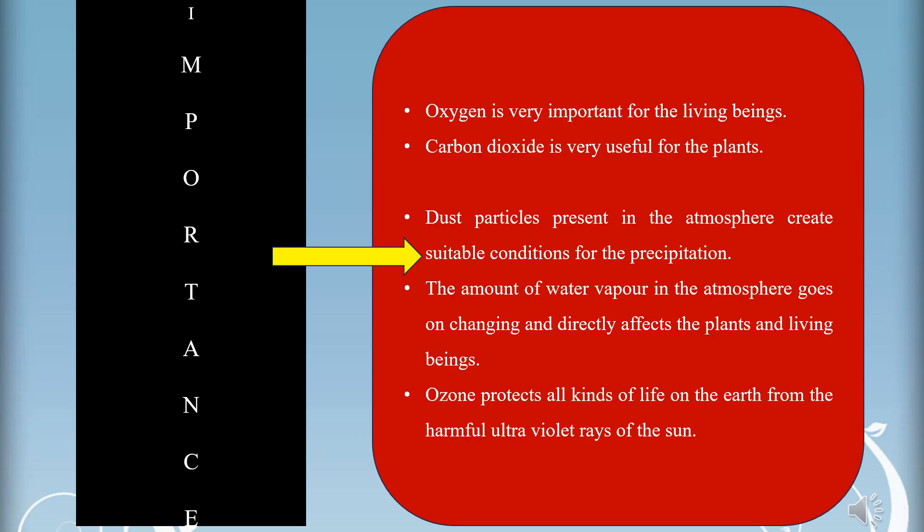What is the importance of the atmosphere? Oxygen is very important for living beings. Carbon dioxide is very useful for plants. Dust particles present in the atmosphere create suitable conditions for precipitation. The amount of water vapour in the atmosphere goes on changing and directly affects plants and living beings. Oxygen protects all kinds of life on earth from the harmful ultraviolet rays of the sun. These are the importance of atmospheric elements.